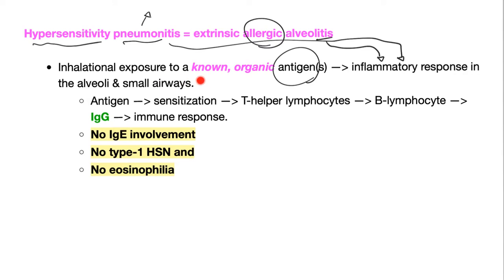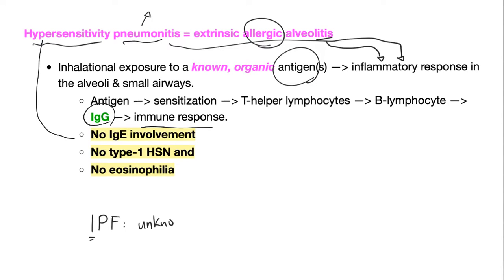The story goes like this: you inhale a known organic antigen — and this is different from idiopathic pulmonary fibrosis, where the antigen is unknown. In hypersensitivity pneumonitis, there is a known organic antigen leading to an inflammatory response in the alveoli and small airways. The antigen triggers sensitization via T-helper lymphocytes, which activate B lymphocytes, which secrete IgG, leading to an immune response. Hypersensitivity pneumonitis is not related to IgE — it's not a type 1 hypersensitivity reaction — and it's not related to eosinophilia.